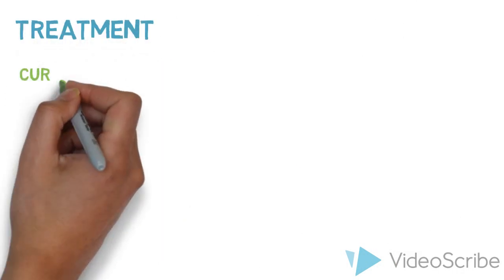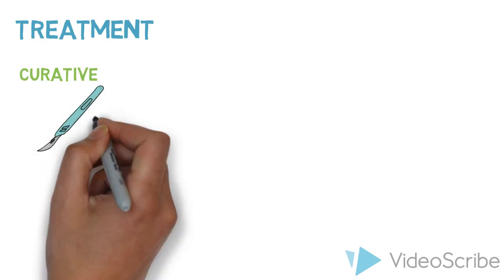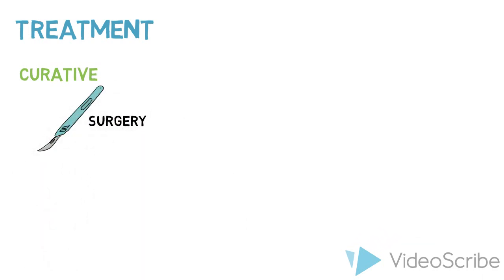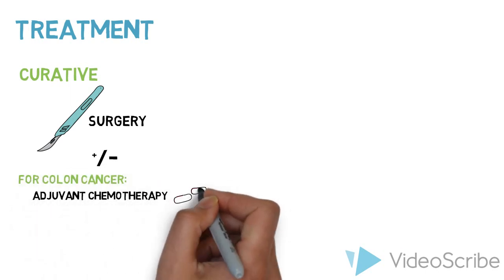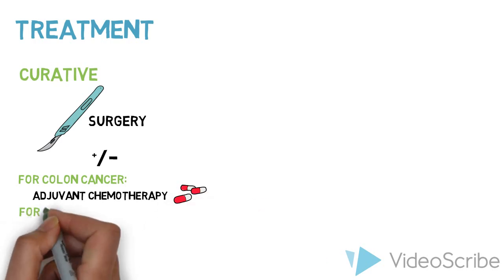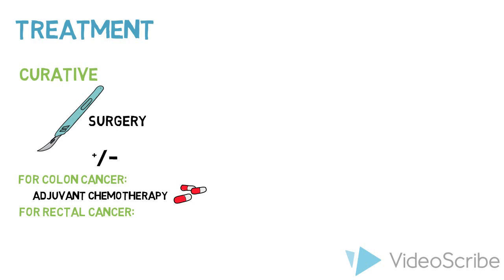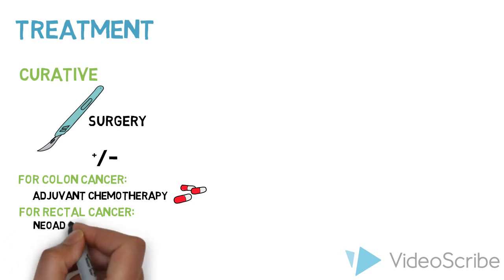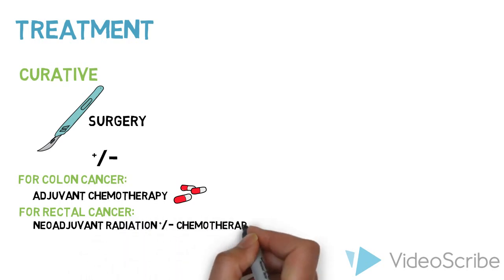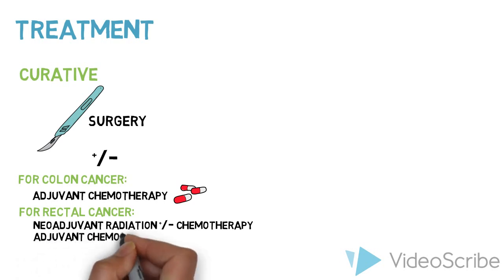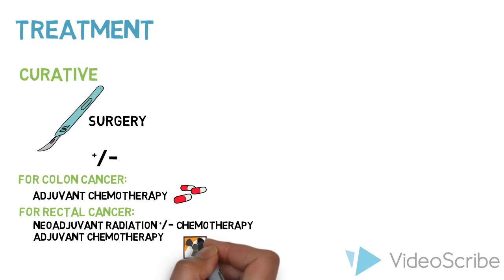Treatment: If the treatment is for curative intent, surgery is the main primary treatment. Adjuvant therapy may also be used for higher-stage cancers. For cancer of the colon, adjuvant chemotherapy is often given after surgery. For rectal cancer, both radiation and chemotherapy may be given. Radiation can be given as a single modality or in conjunction with chemotherapy prior to surgery. Postoperatively, adjuvant chemotherapy may also be delivered. Decisions regarding treatment often involve conversations between medical and radiation oncologists as well as surgeons.